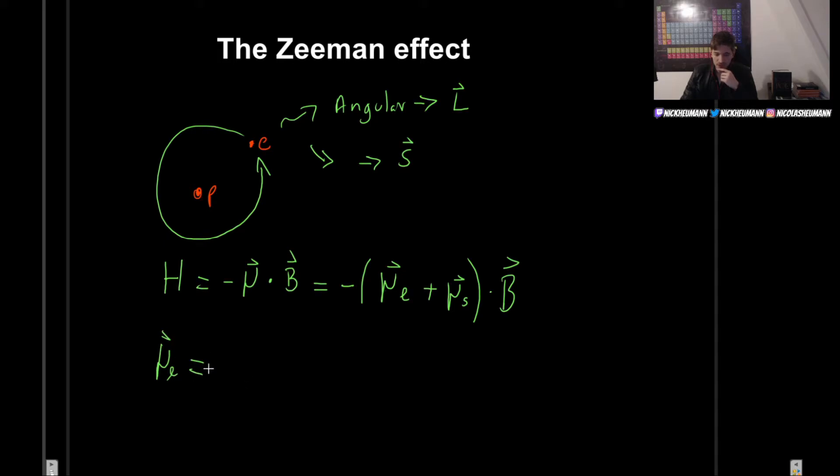But the results that we found is that for the angular case, for the angular motion, we have minus E over 2m times the angular momentum. And for spin, we have twice this amount.